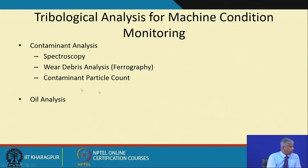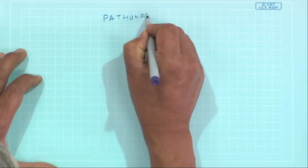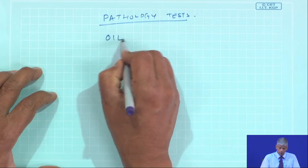The contaminant analysis involves studying in detail the size, shape, nature, and number of contaminants per given volume, and it gives us a clue as to what is wrong with the machine. There is another part, which is known as oil analysis. The oil's properties would change — for example, specific gravity, viscosity, acid number, or base number — all these properties would change. It is very similar to pathological tests done on human blood or urine samples; similarly, we will do it on the lubricating oil.